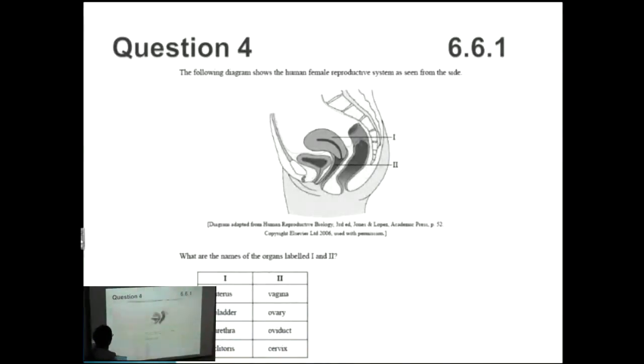Question number four, some female anatomy here. So what structures are shown from the side here? Number one we have here is a uterus, see how it's pointing forward like this, kind of like an emu. And then number two you have the vagina. These are just some basic structures that you should need to know. So we have uterus and vagina and so that's A here.